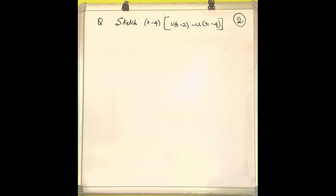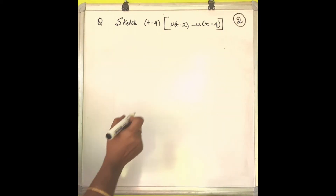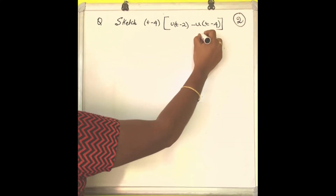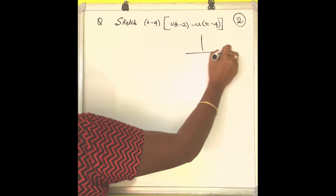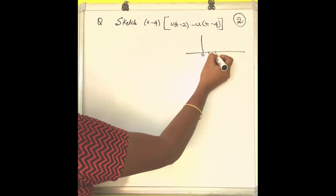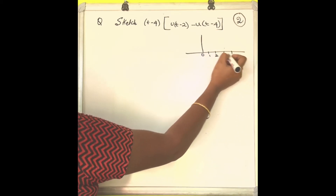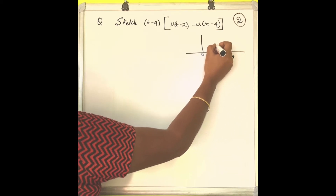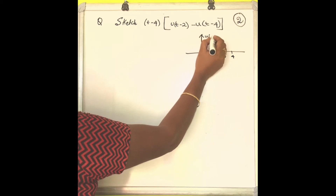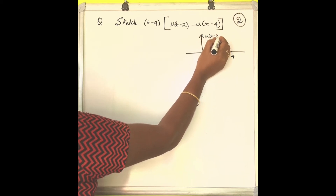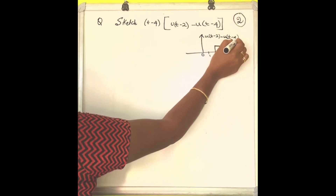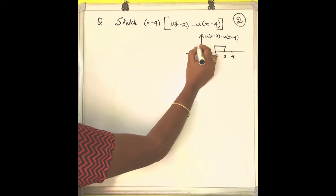Drawing the resulting signal: t values 0, 1, 2, 3, 4. The signal u(t minus 2) minus u(t minus 4) has amplitude 1 only between t=2 and t=4 (a rectangular pulse).